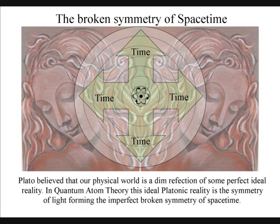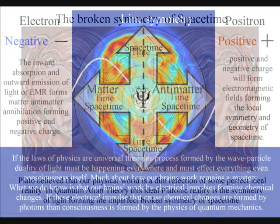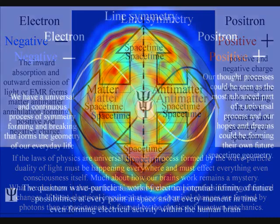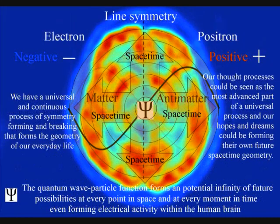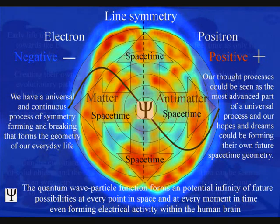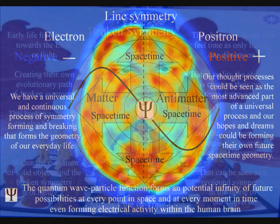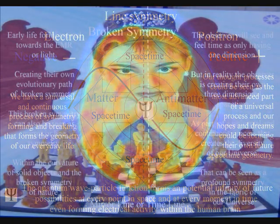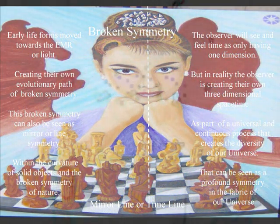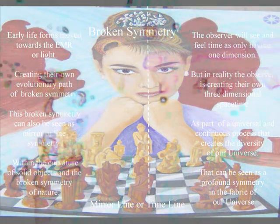Despite rapid progress, much about how the brain works remains a mystery. But what we do know is that our brains work by electrical impulses forming chemical changes. This electrical activity also forms electromagnetic fields. If these electrical impulses that cause chemical changes are formed by photons, then consciousness is formed by the physics of quantum mechanics. Therefore our thought processes could be seen as the most advanced part of a universal process, and our hopes and dreams could be forming their own future space-time geometry.